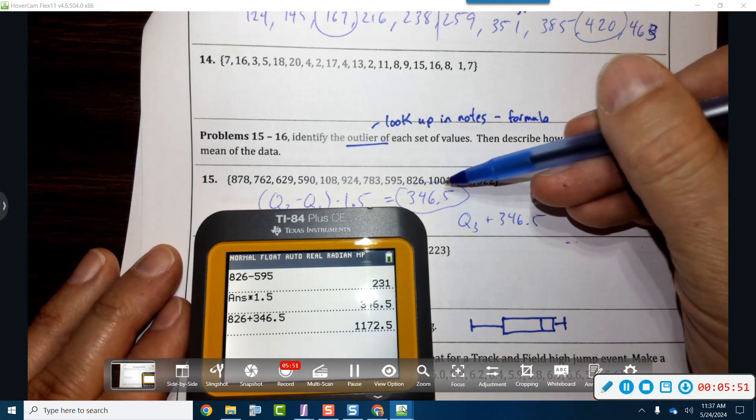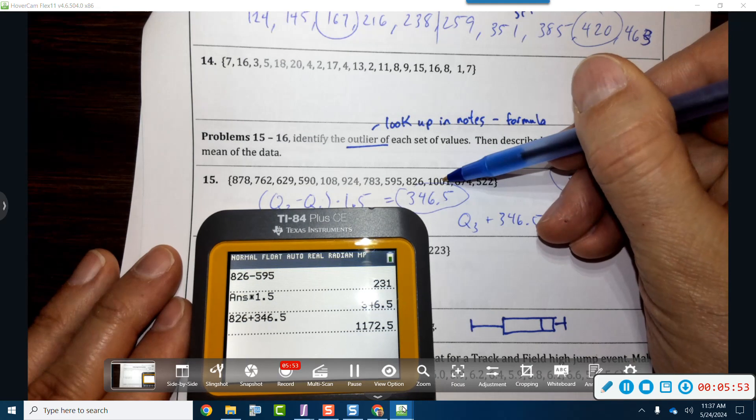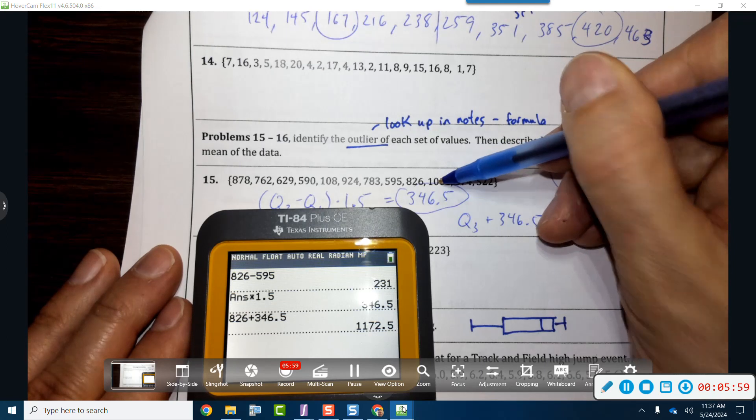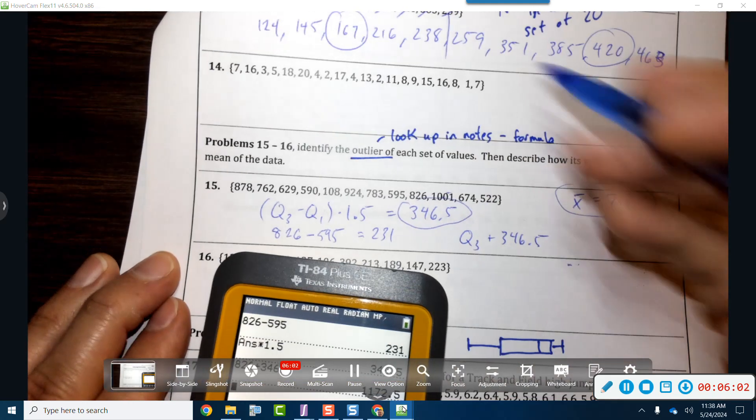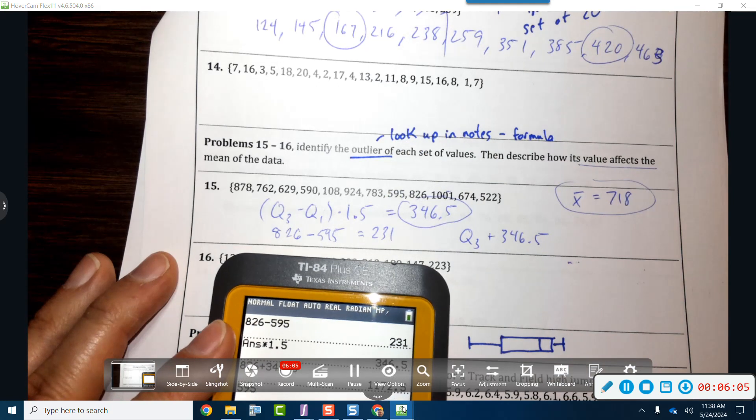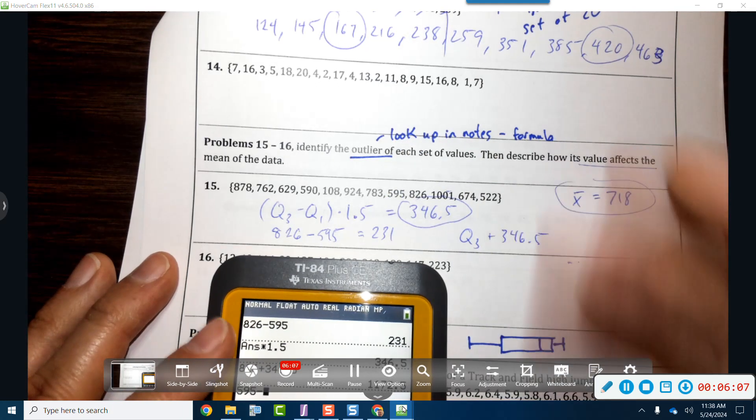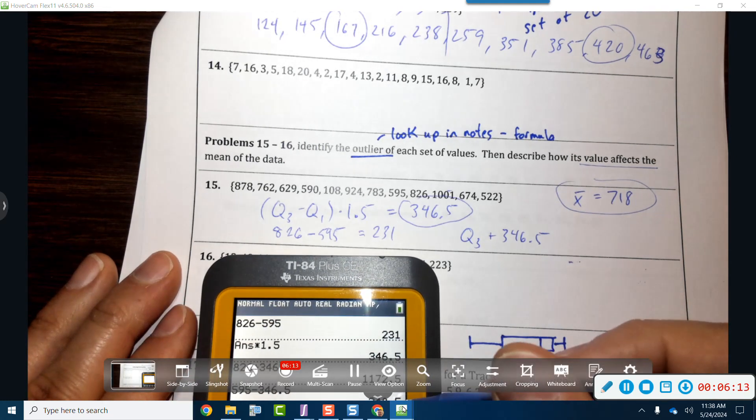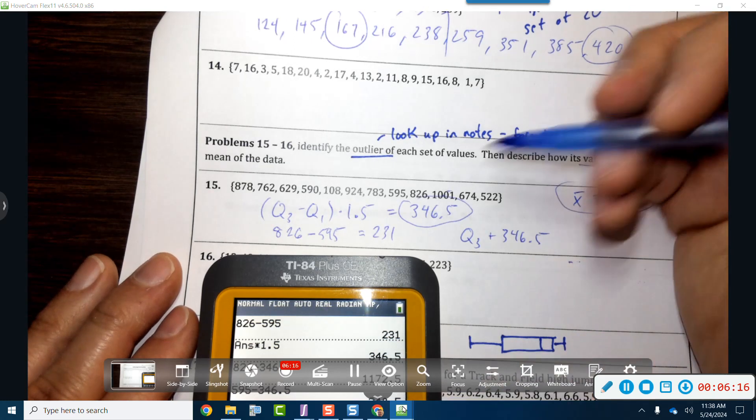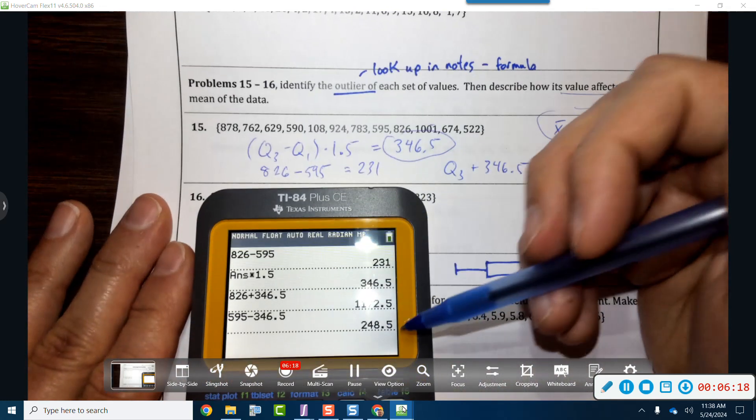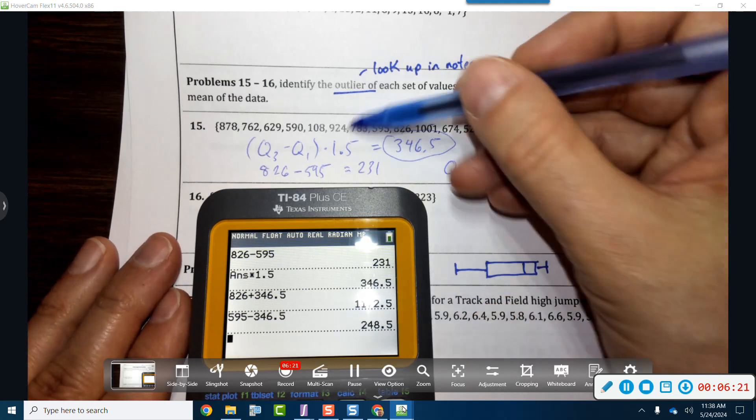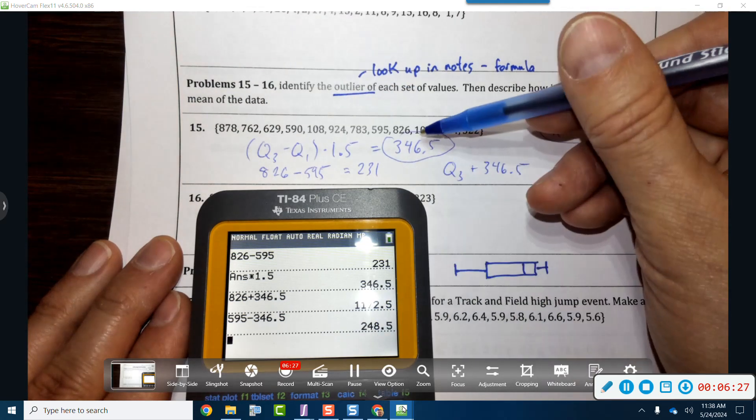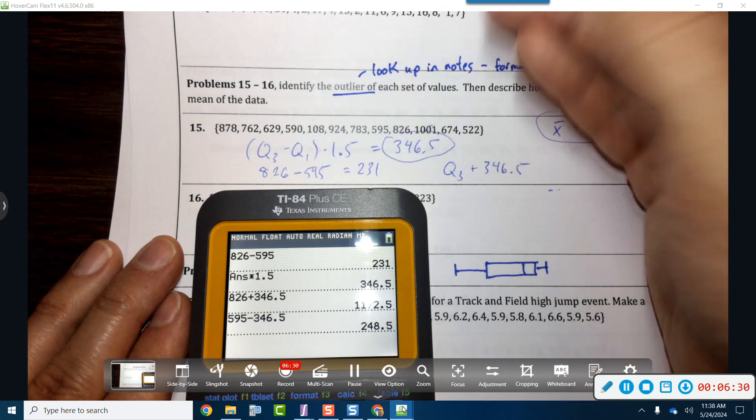If I add it to Q3, which we said was 826, if I add 346.5, it's 1172. Does this make this guy an outlier? No, he is not an outlier, so we need to put him back in the data. If I were to go now to 595 and then subtract 346.5, that is 248. So it looks like that would be the lowest value, and this 108 is actually too small. He is smaller than 248. This guy's big enough, but this guy's too small, so our outlier is this guy.